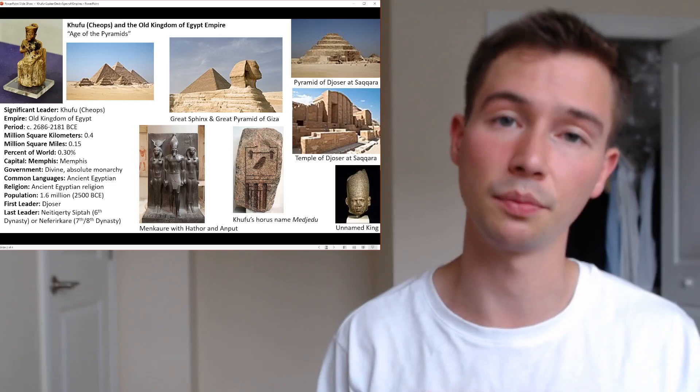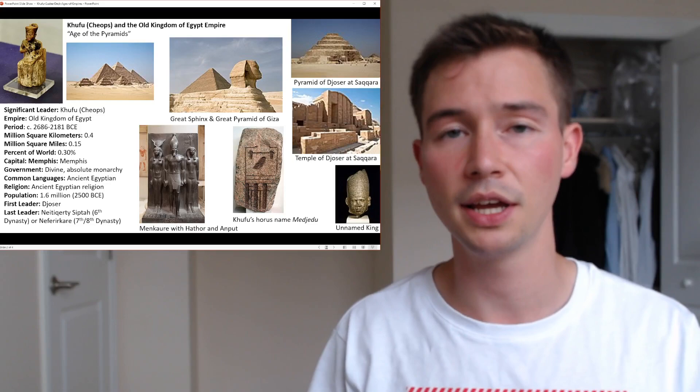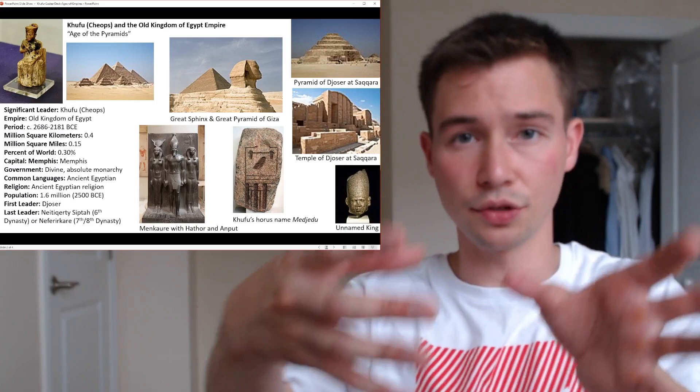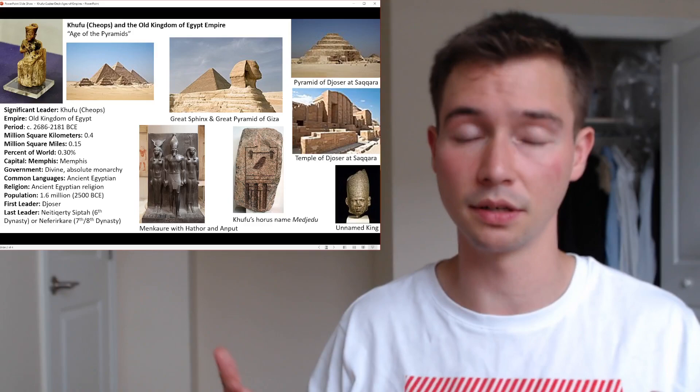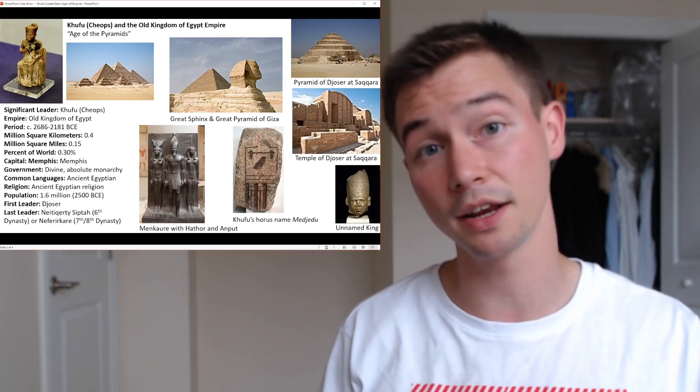Graham Hancock, an investigative journalist and scholar I find fascinating, notes that in Turkey there are ancient sites that get smaller and smaller over time — contrary to what one might expect from developing civilizations. Similarly, the Great Pyramid of Giza was built under Khufu and was never surpassed, which might mark one of the turning points of the decline of the Old Kingdom.